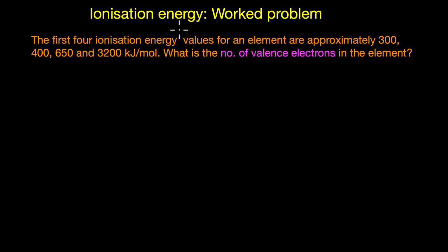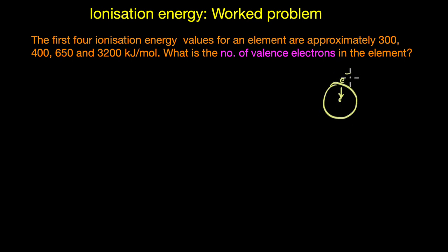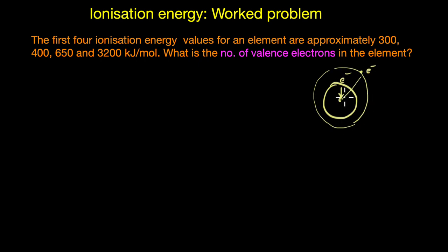Before we begin, let's have a short recap of what we mean by ionization energy. Ionization energy is the amount of energy required to remove an electron from a neutral atom. The more tightly held the electron is, the greater the ionization energy. We need to provide much more energy to remove a tightly held electron compared to one present far away from the nucleus experiencing much less attractive force.